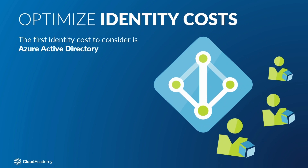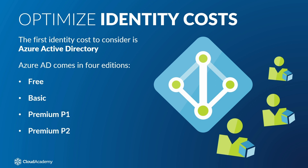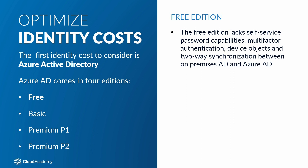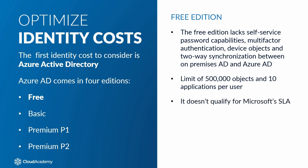The first identity cost to consider is Azure Active Directory. Azure AD comes in four editions: free, basic, premium P1, and premium P2. The free edition is generally not suited for most businesses since it lacks self-service password capabilities, multi-factor authentication, device objects, and two-way synchronization between on-premises AD and Azure AD, just to name a few features. This version is free, but it has a limit of 500,000 objects and 10 applications per user and does not qualify for Microsoft's SLA.